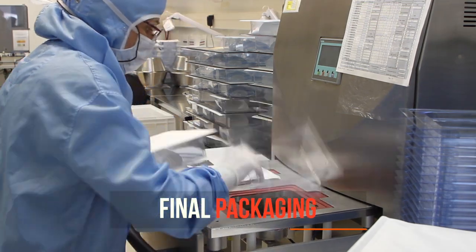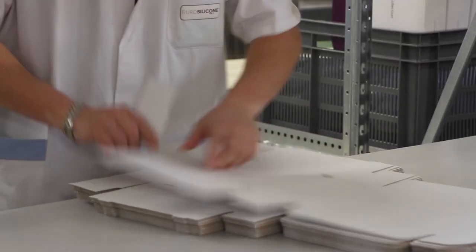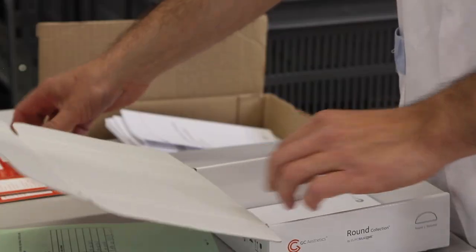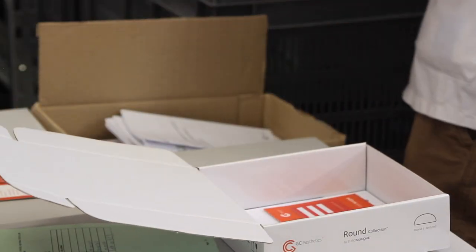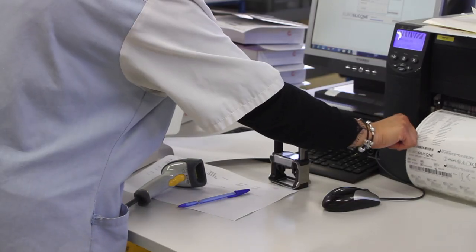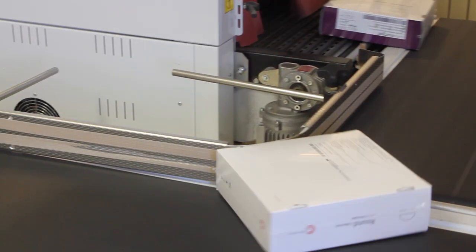So here we are doing a double packaging with blisters. That's the final step of the process. And after this step, the product is going to the sterilization process.